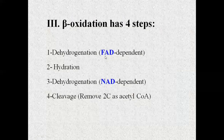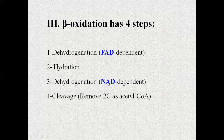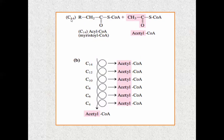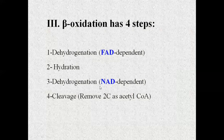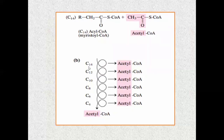Energy is captured by electron carrier molecules FAD and NAD in each round. For a 14-carbon fatty acid, you need six rounds of beta-oxidation reactions, producing seven acetyl-CoA molecules (since 14 divided by 2 equals 7). This gives six FADH2 and six NADH as electron carriers, plus seven acetyl-CoA. Each acetyl-CoA enters the TCA cycle and from each TCA cycle you get 3 ATP equivalents.